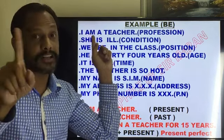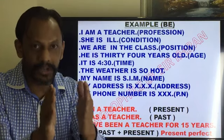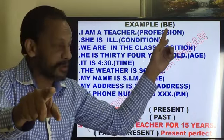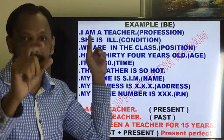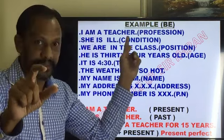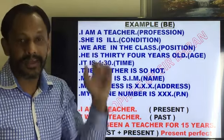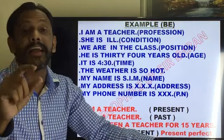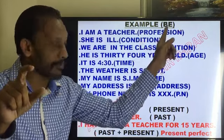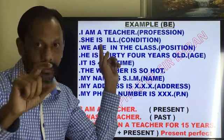This 'am' is acting as a state verb, not a helping verb. It is introducing 'I' and talking about the profession of 'I'. Now: 'She is ill.' Here, 'ill' is a condition. For condition, we use be. This word 'is' here is not a helping verb — it is a be verb, a state verb. 'We are in the classroom' — this is a position. When we talk about position, we use be. This 'are' is a be verb, not a helping verb — it talks about your position.